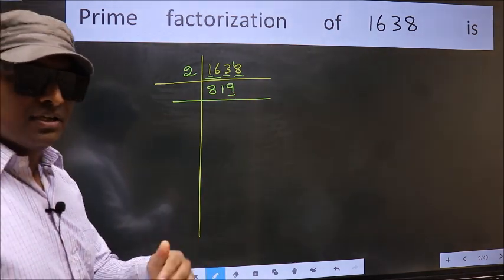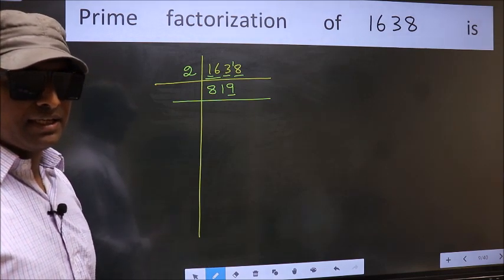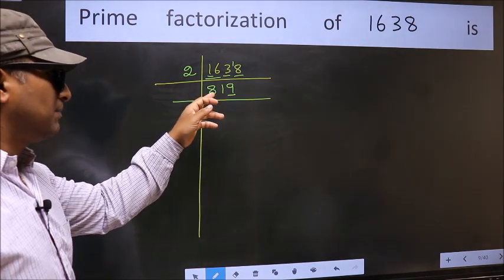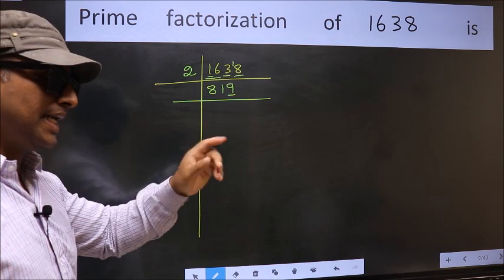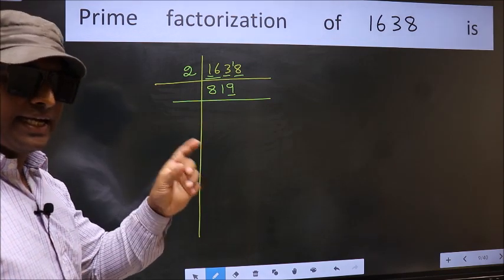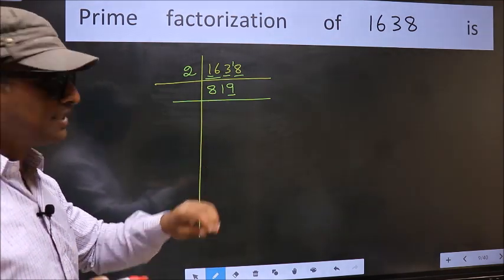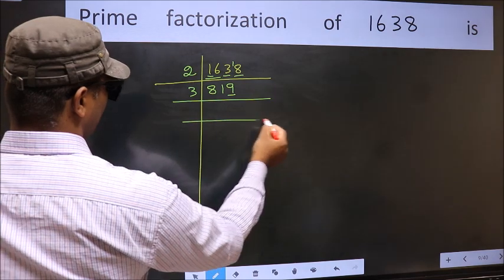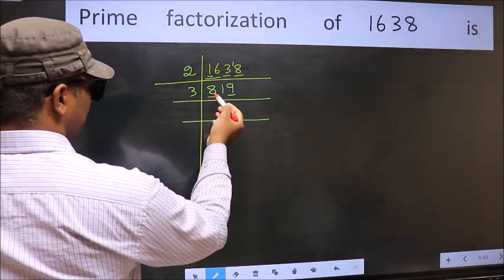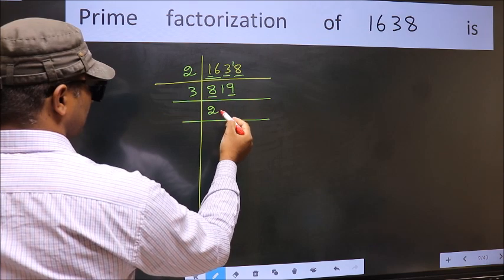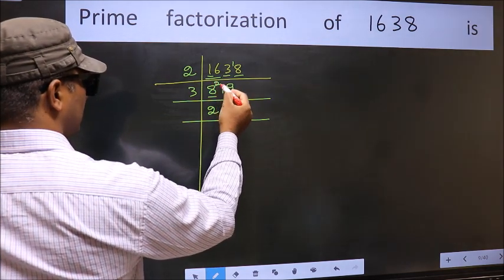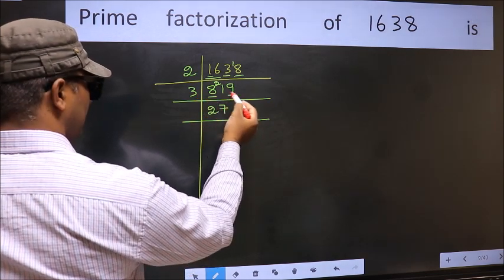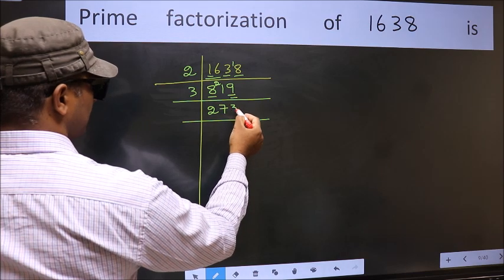Next prime number 3. To check divisibility by 3, we should add the digits: 8 plus 1 plus 9 equals 18, and 18 is divisible by 3, so this number is also divisible by 3. So take 3 here. First number 8; a number close to 8 in the 3 table is 3 twos are 6. 8 minus 6 is 2, carried forward: 21. When do we get 21 in the 3 table? 3 sevens are 21. The other number is 9; when do we get 9 in the 3 table? 3 threes are 9. So 819 ÷ 3 = 273.